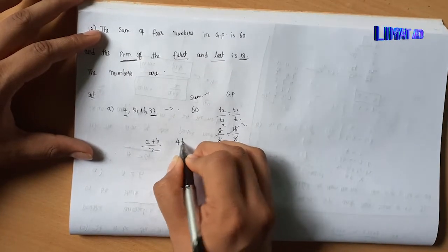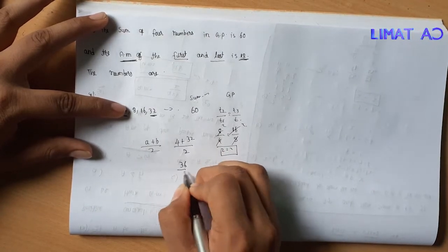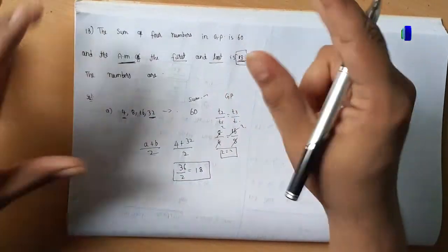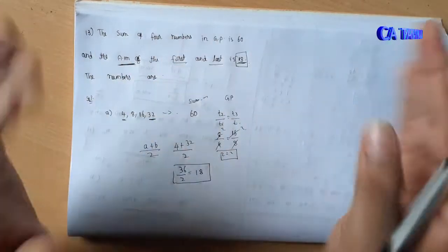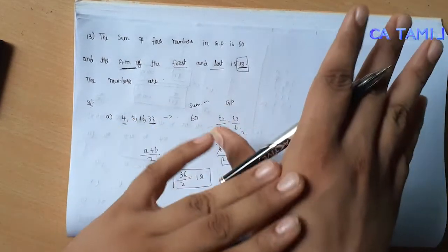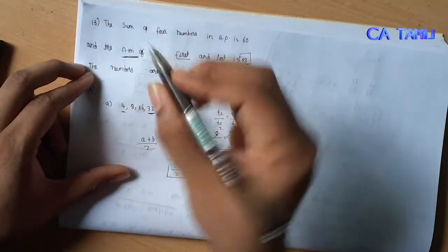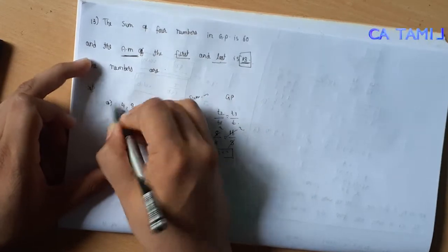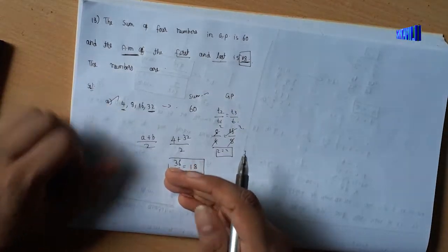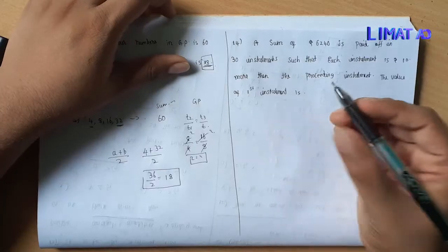The AM of first and last: 4 plus 32 divided by 2 equals 36 divided by 2 equals 18. So 18 equals 18, confirmed. The first option is correct.